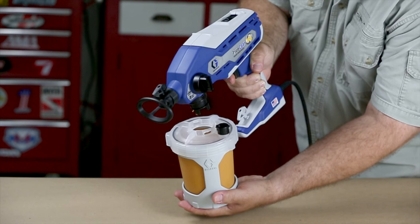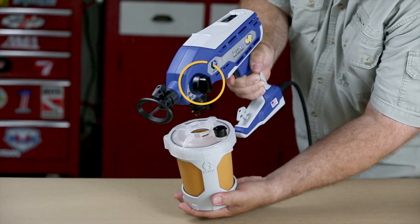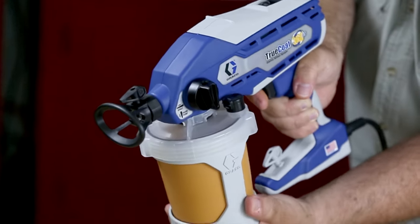Align the vacuum valve on the cup cover with the prime pump spray knob pointed in the prime pump position. Push the cup assembly onto the sprayer and twist to lock.